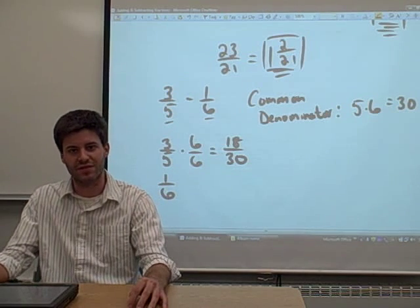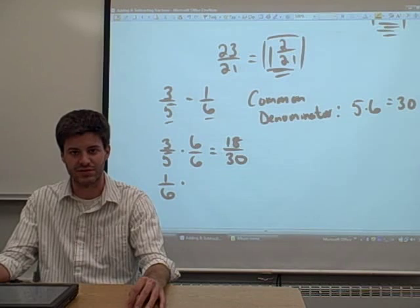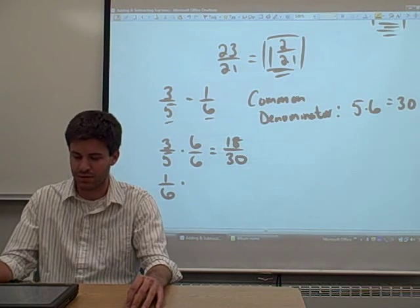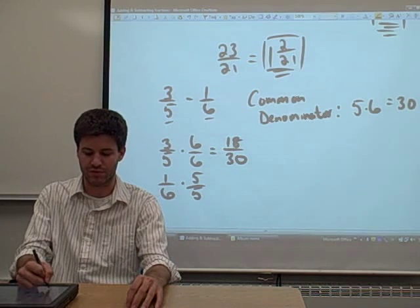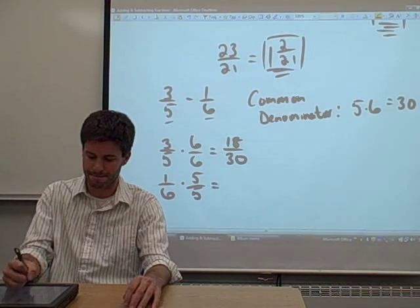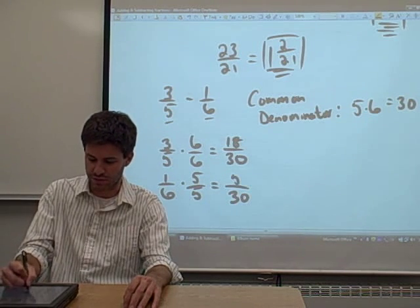Then we have to look at 1 sixth. We need to convert that into a fraction that has 30 as its denominator. To do this, we multiply by 5 over 5, of course, because 6 times 5 is 30. So we're going to get 30 in the denominator, 1 times 5 in the numerator is 5.